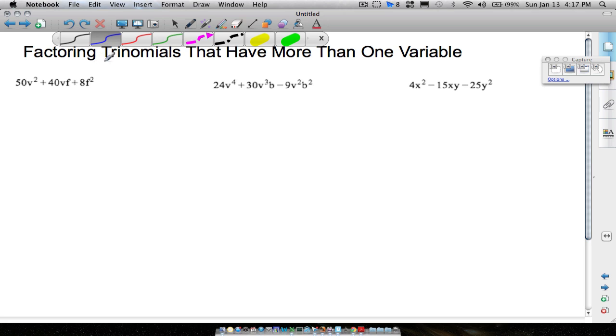To start off this first example here, if we look at these three terms, always look for a GCF first. All these numbers are even, so we can at least pull out a 2. The v's are not found in all three terms and we don't see an f in all three terms. So it looks like just 2 is going to be our GCF. If we factor a 2 out, we're left with 25v squared plus 20vf plus 4f squared.